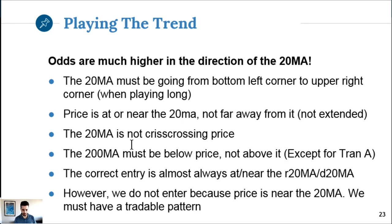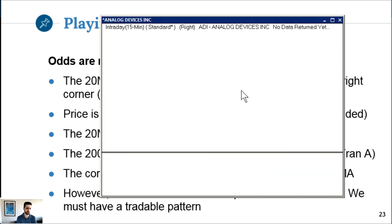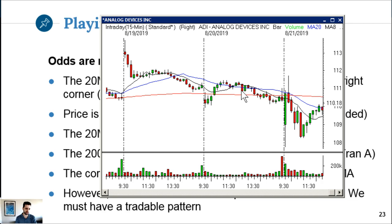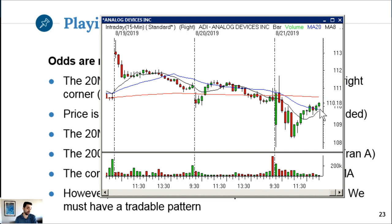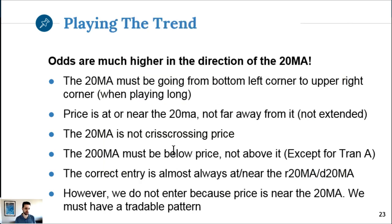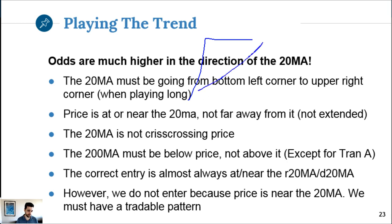The 20MA should not be crisscrossing price - not going through it. For example, ADI was on my short watch but it was too strong - it kept going above the 20, crisscrossing it, so it's no good. If it were really that weak it wouldn't be going above the 20. This is especially true with bases: if a stock is basing and the moving average catches up but instead of breaking out it continues to base, you don't want to play it long - it often fails.